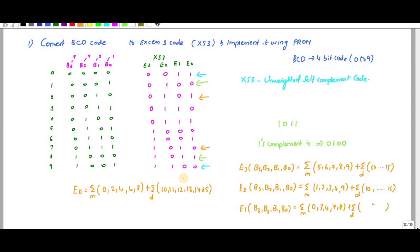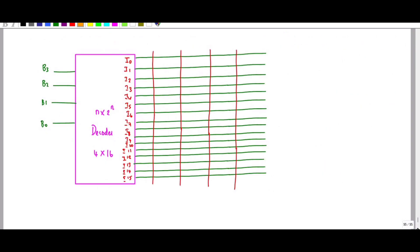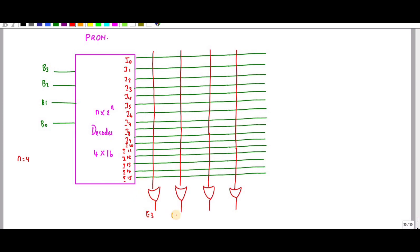This is implemented using a Programmable Read Only Memory. The PROM consists of a decoder and an OR gate. The OR gate is programmable and the AND gate is fixed. Since we have 4 inputs, the decoder formula is n × 2^n, so 4 × 2^4 = 16 — giving 4 inputs and 16 outputs labeled I0 to I15. The outputs are E3, E2, E1, and E0.